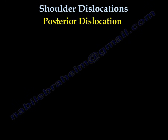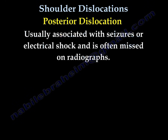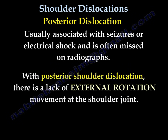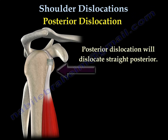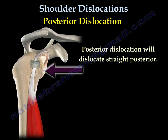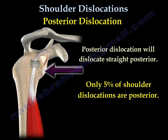Posterior dislocation of the shoulder is usually associated with seizures or electric shock. It is often missed on radiograph — about 50% of cases are missed. With posterior dislocation of the shoulder, there is a lack of external rotation movement of the shoulder joint. Only 5% of shoulder dislocations are posterior.